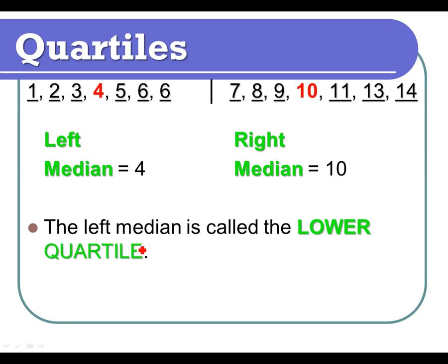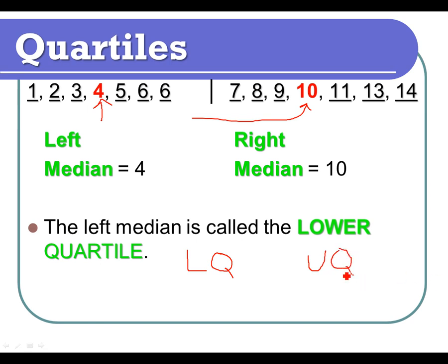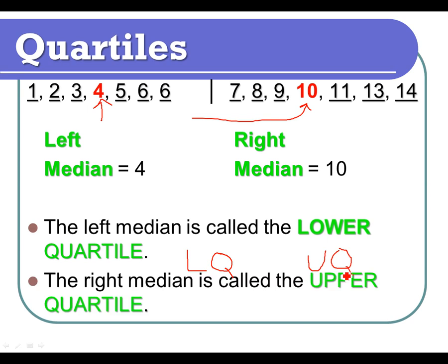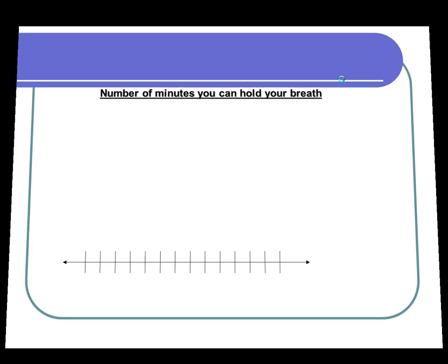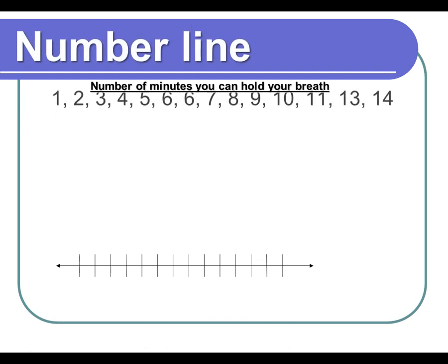The left median is what we call the lower quartile — you may see that referred to as LQ. And the other median on the right side is called the upper quartile — UQ. So you have your LQ and your upper quartile, UQ. Those are the official names. So now we've talked about three things: we have the median of the entire set, the lower quartile (LQ), and the upper quartile (UQ). We have pretty much the most important parts already done.